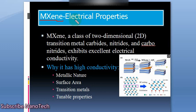The electrical properties of MXene make them very unique in many applications. For instance, we can use it for energy storage devices, bio-sensing applications, batteries, supercapacitors, and many other electrical devices where electrical conductivity is a major requirement. The question is: why do MXenes have excellent electrical properties? We will discuss the major reasons.